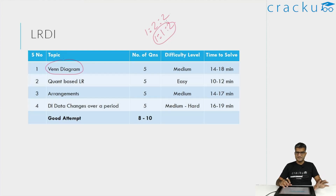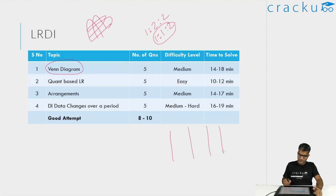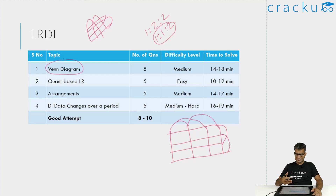Coming to the four sets, I attempted the Venn diagram set first because in LRDI I try to get two sets correct, and Venn diagrams is a fairly easy set type if you know how to represent the data. For a four-parameter Venn diagram, you draw four lines horizontally and four lines vertically, connecting the alternate lines. This is how you represent a four-parameter Venn diagram. If you know how to draw this, solving the set is fairly straightforward. It is not difficult, but you have to know it. I would not consider this to be very hard, although very few people attempted it, which shows that people are probably not preparing for Venn diagrams. So this is a medium set.